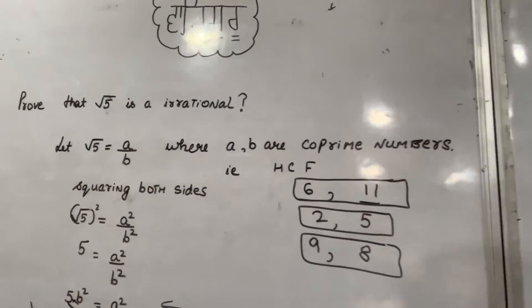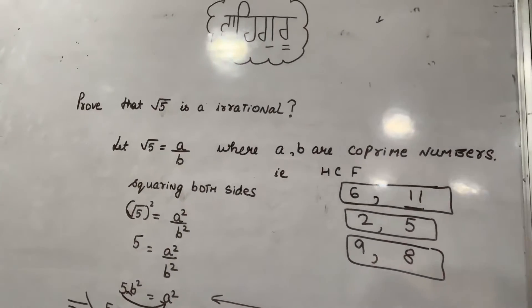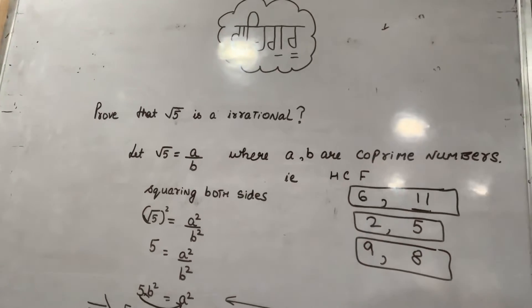Dear students, in this video I am going to cover a very important question from chapter 1. Prove that root 5 is irrational.